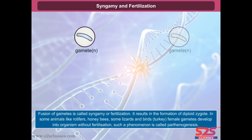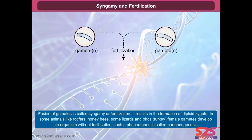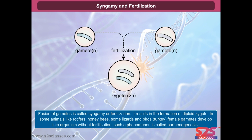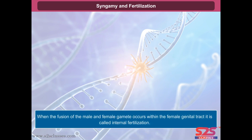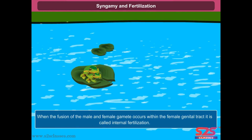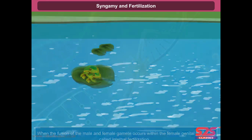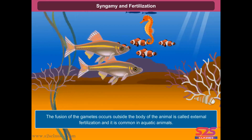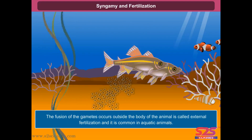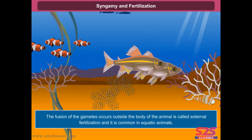Syngamy and fertilization: Fusion of gametes is called syngamy or fertilization. It results in the formation of a diploid zygote. In some animals like rotifers, honeybees, some lizards and birds such as turkey, female gametes develop into an organism without fertilization. Such a phenomenon is called parthenogenesis. When the fusion of the male and female gamete occurs within the female genital tract, it is called internal fertilization. The fusion of gametes occurring outside the body of the animal is called external fertilization, and it is common in aquatic animals.